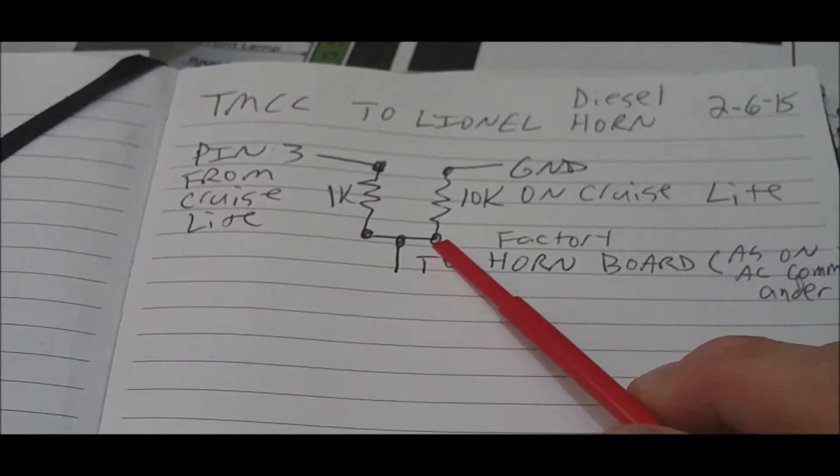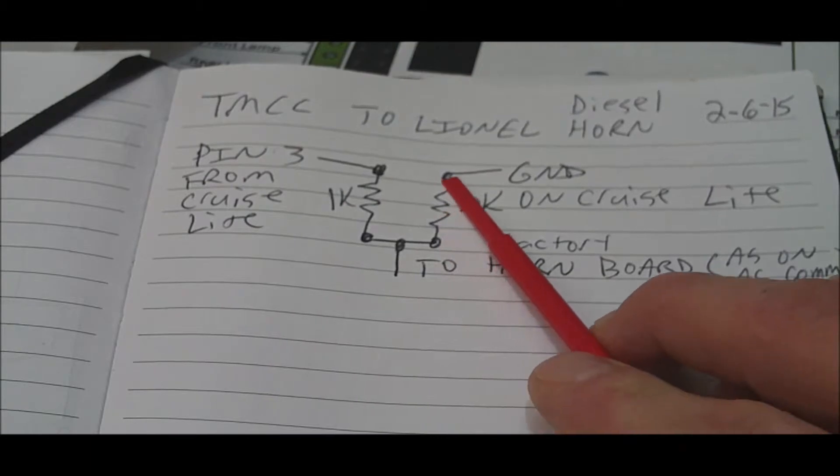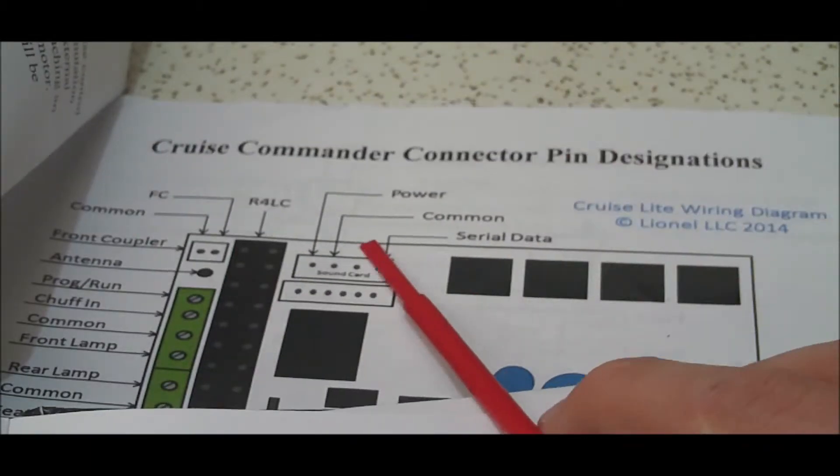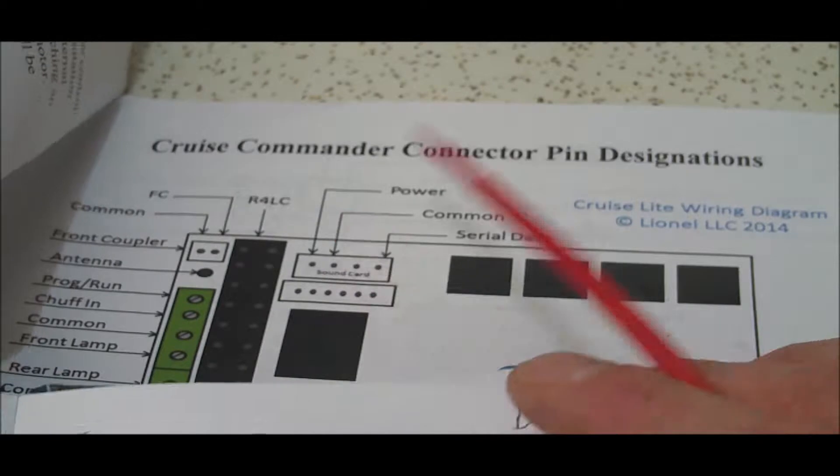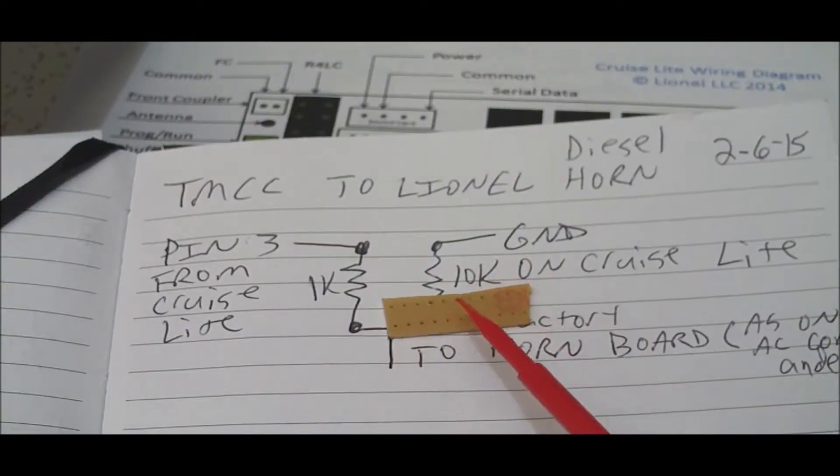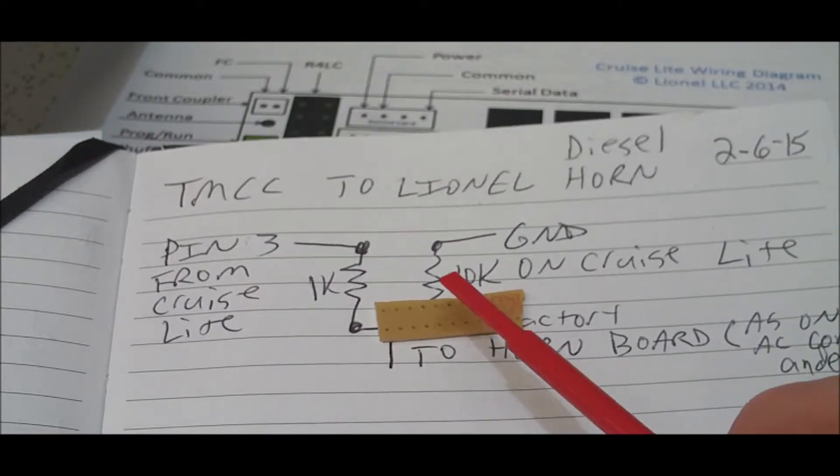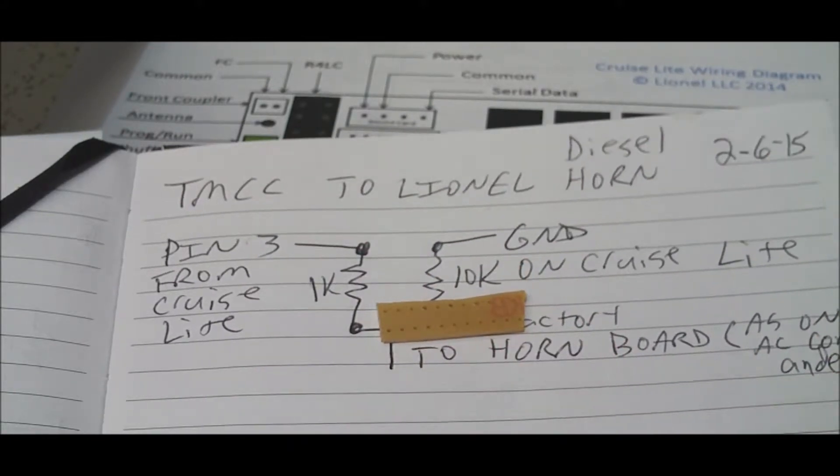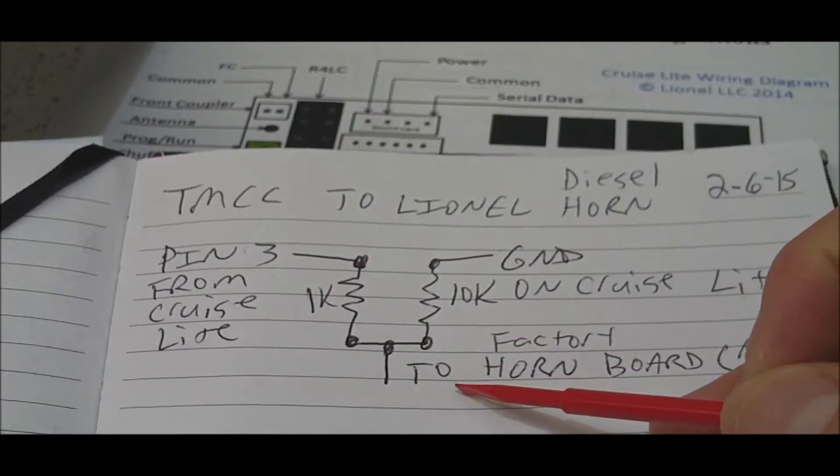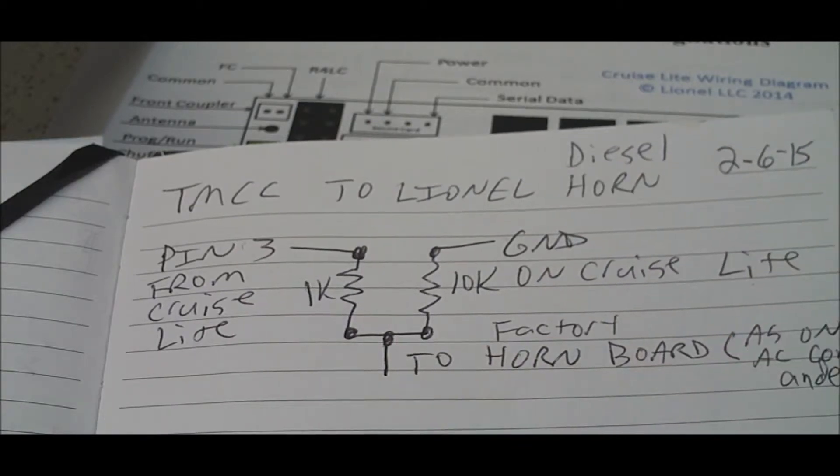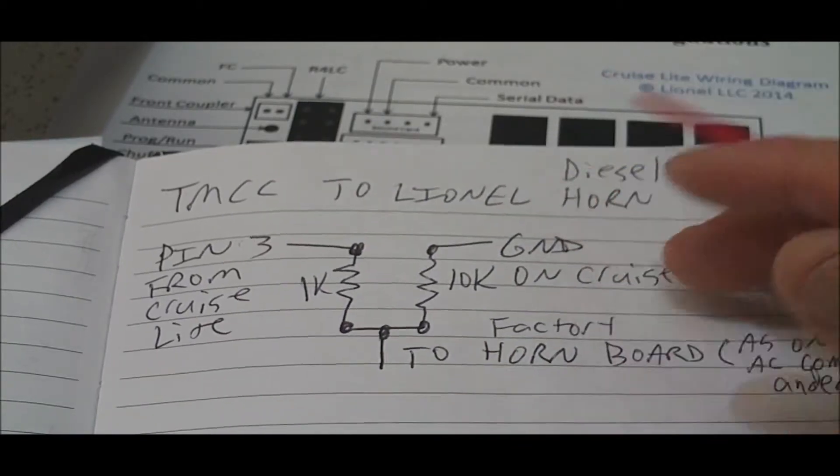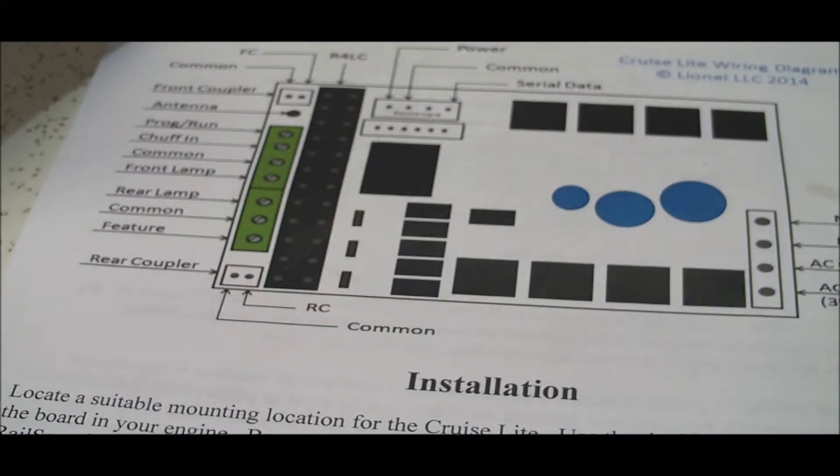And then from that wire you're also going to go through a 10k resistor to ground, and I just use the common on this board here. I just took a real small piece of perf board about half this size, put the two resistors on there, attach the three wires, and then put this inside of the diesel engine. Now I have reliable horn output. So hopefully this is useful and helpful to you guys trying to.